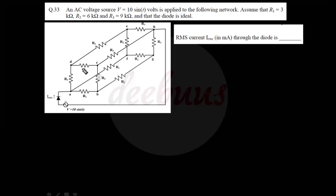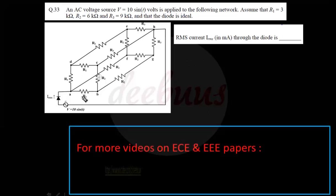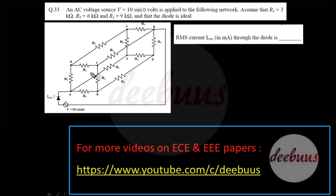Moving to the next question: an AC voltage source v = 10 sin(t) volts is applied to a network with R1 = 3 kΩ, R2 = 6 kΩ, R3 = 9 kΩ, and an ideal diode. We must find the RMS current through the diode. The network is a cube connection with R1, R2, R3 elements. I am redrawing this figure.